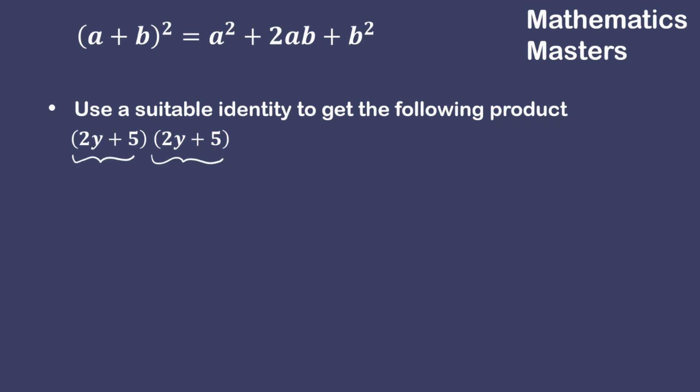Now when a number multiplies itself, that means we can write the square of the number. Over here it's an expression, so similarly we can write the square of 2y plus 5 like this.